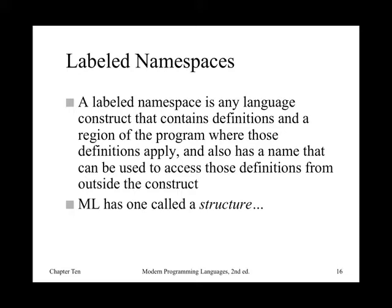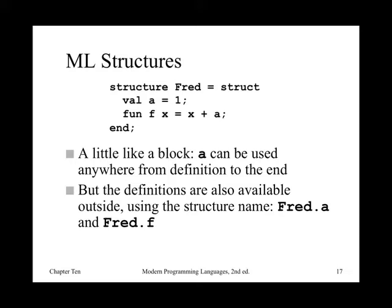In ML, we have this idea of a structure. Here's an example of the structure construct in ML. In this case, we've got structure Fred — he's a struct — and we've got a value A and some function, et cetera. A is inside that context, but by naming this thing Fred, later on we can use Fred.a and Fred.f. That's an example of a situation where, once having named it, we can access it externally. That's the basic idea.